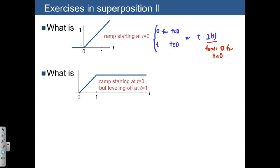Here's another one. This is a ramp that's starting at time 0, but it levels off at time 1. This would have three intervals of time: 0 for t less than 0, then it's going to be equal to t for any time between 0 and 1, and then it's just going to be equal to 1 for any time greater than or equal to 1. I won't write out the other method just yet.